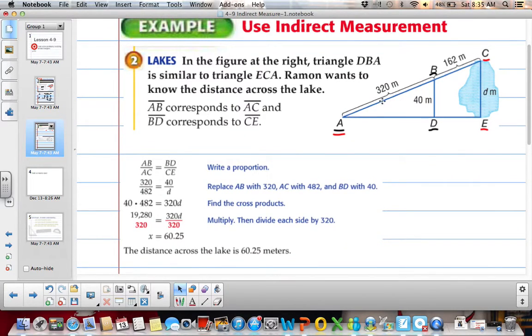So we know that AB is 320. We know that AC, we have to add both of these sides together to get 482. We know that BD is 40. And then we're not sure what CE is yet. So then that's our variable.